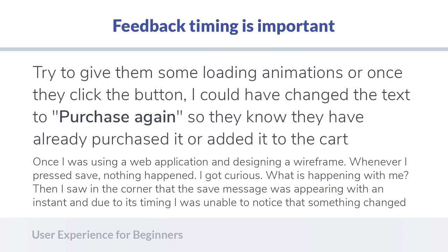This is called interaction timing — how our minds perceive timing, sound, and animations. If you are developing an e-commerce website, try to show users some loading animations, or once they click a button you can change the text of the button to 'Purchase Again', so users know they have already added the item to the cart.